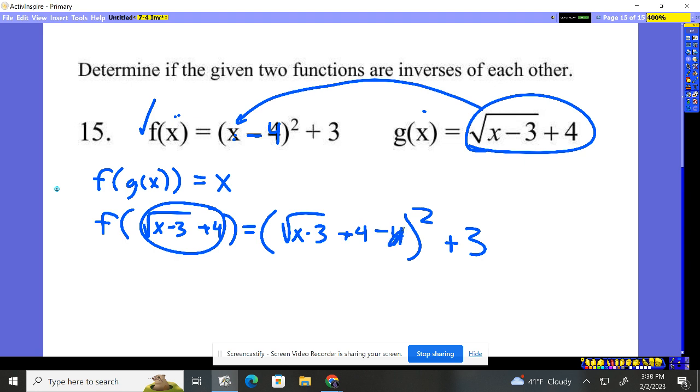Because plus 4 minus 4 does what? That goes away. And so here's all you have: an x minus 3 square root squared plus 3. Wait a second. If you square a square root, doesn't it just disappear? Yes, which leaves you with x minus 3 plus 3, which gives you an answer of x.